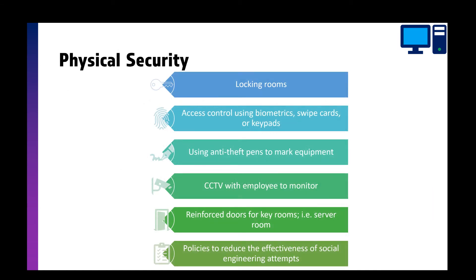Physical security measures include locking rooms, using biometrics, swipe cards or keypads to enter rooms, anti-theft pens to mark equipment, CCTV with someone constantly monitoring it, reinforced doors, and policies to reduce the effectiveness of social engineering. Social engineering is essentially hacking without using a computer — you ring up pretending to be someone else and trick company staff into giving away information. Having good policies and well-trained staff stops that from happening.